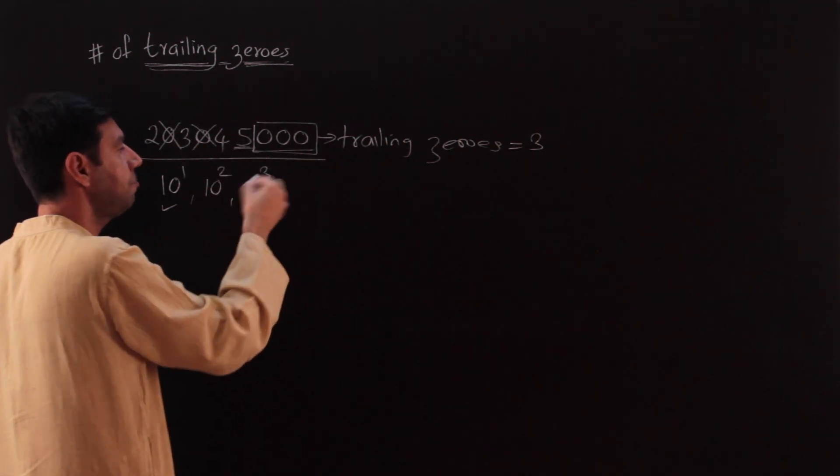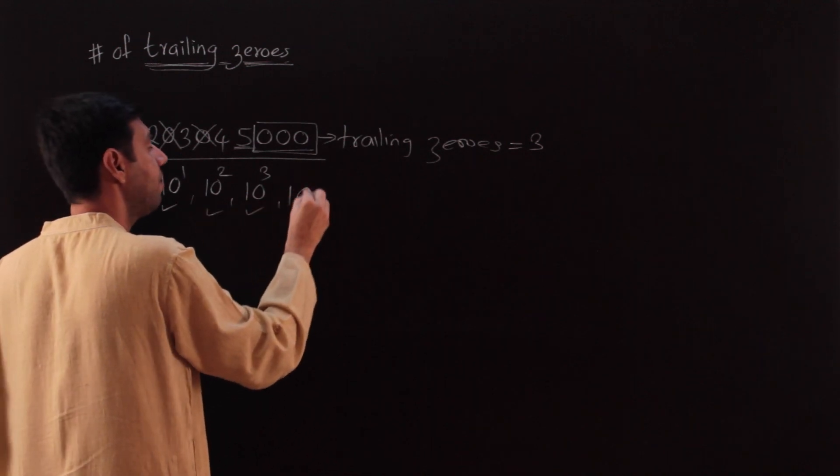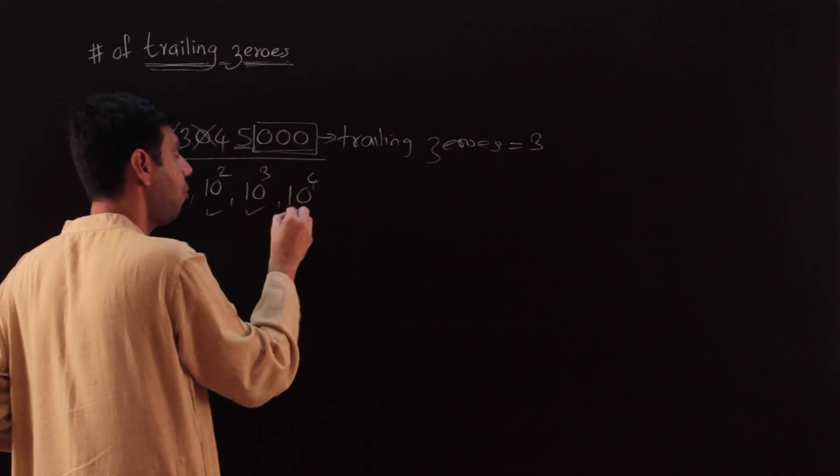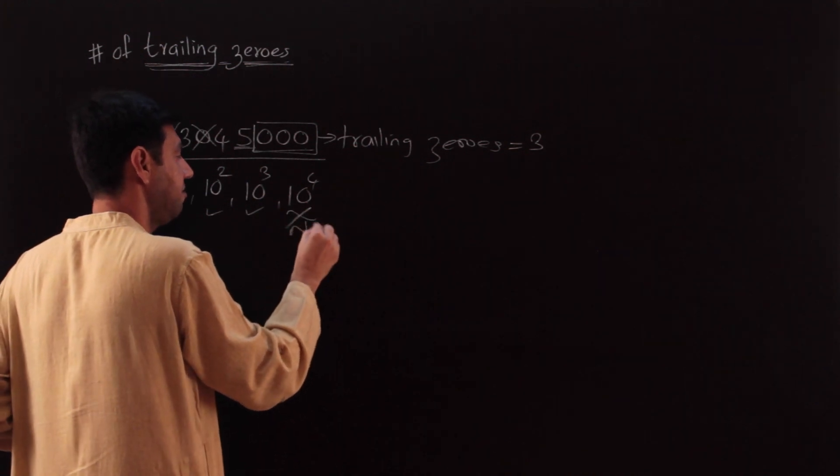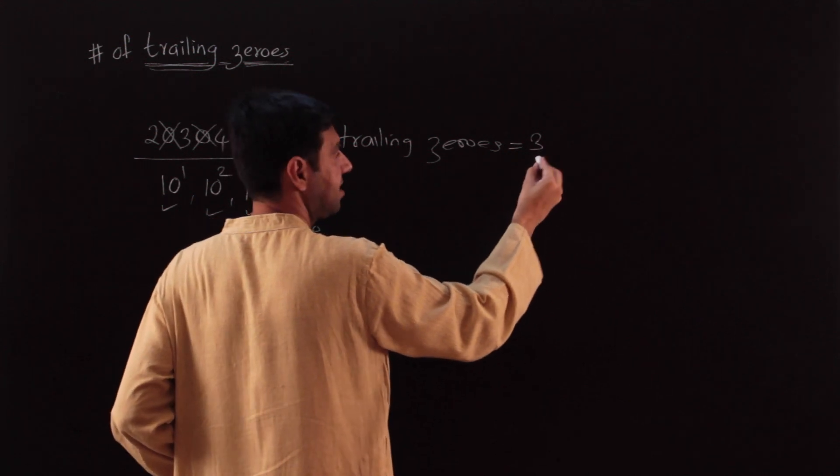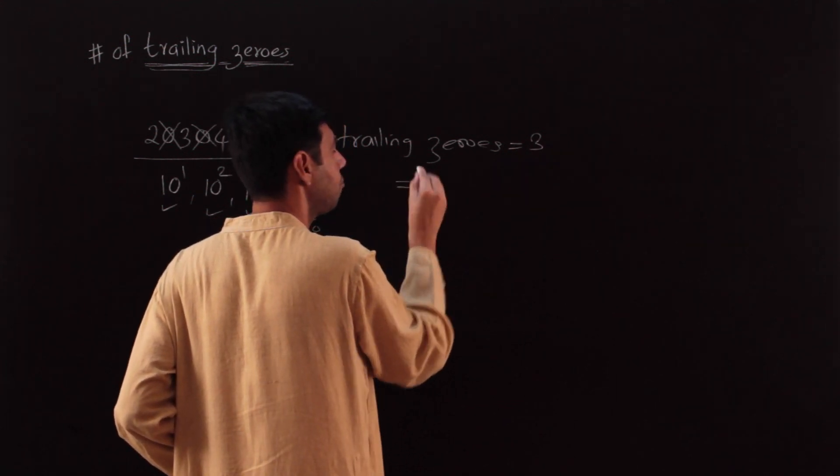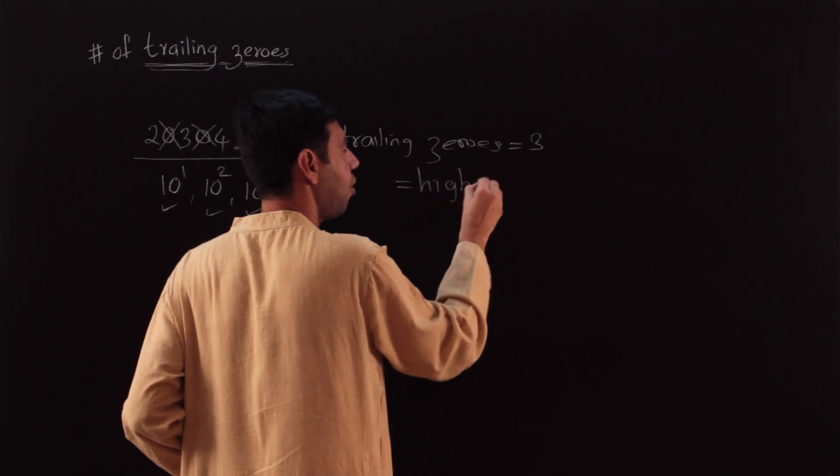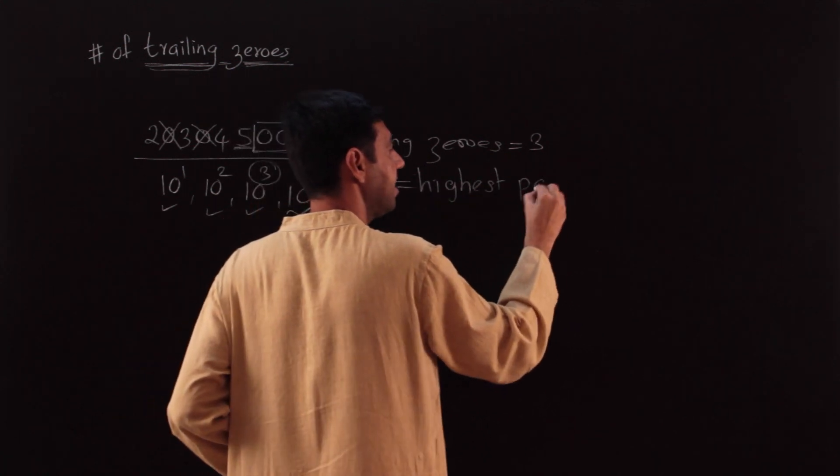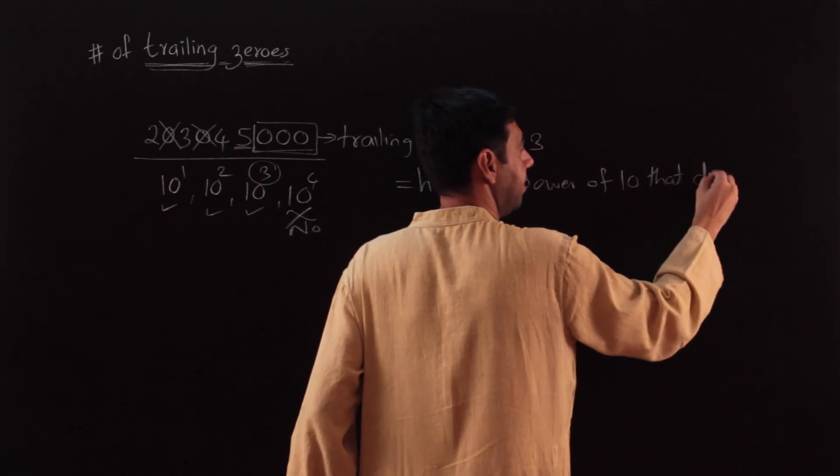Is it divisible by 10 cube? The three zeros will cancel out, it is divisible. However, is it divisible by 10 raised to 4? No, it is not divisible. So the number of trailing zeros, this three, could also be said to be equal to the highest power of 10 that divides the number.